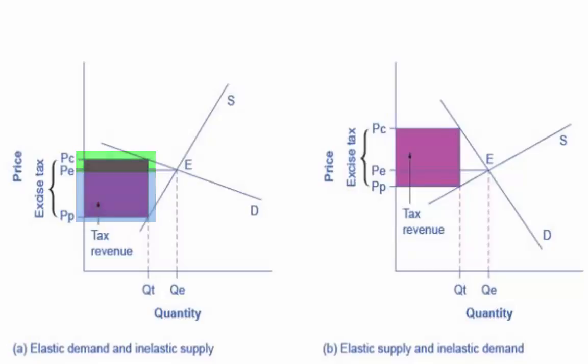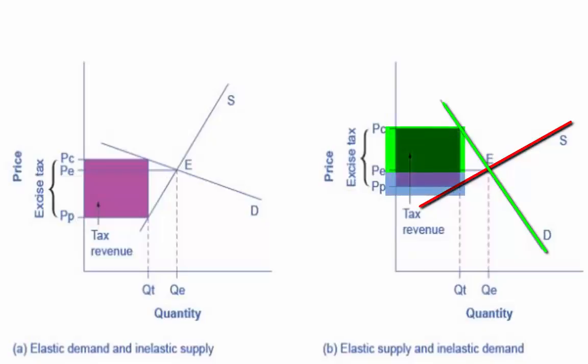As we see in the graph on the left, when the supply is more elastic than demand, the more elastic the demand and supply curves are, the lower the tax revenue.